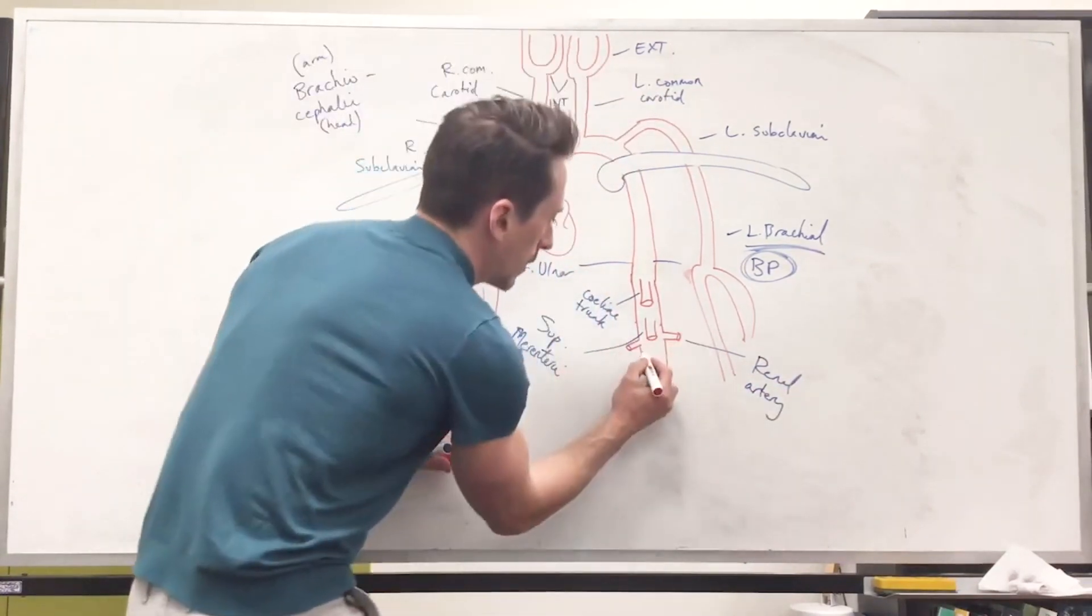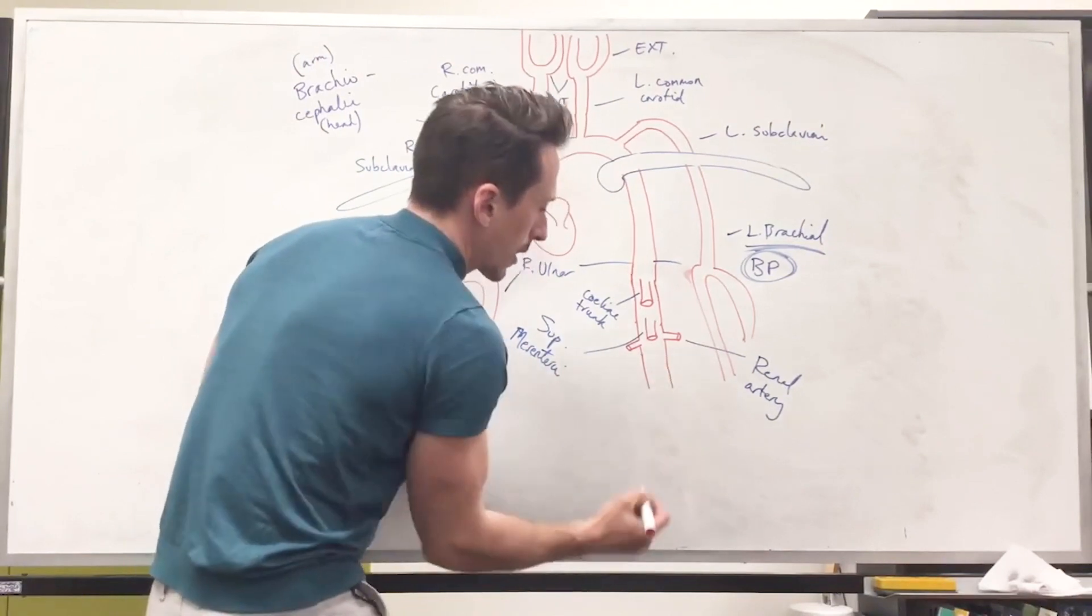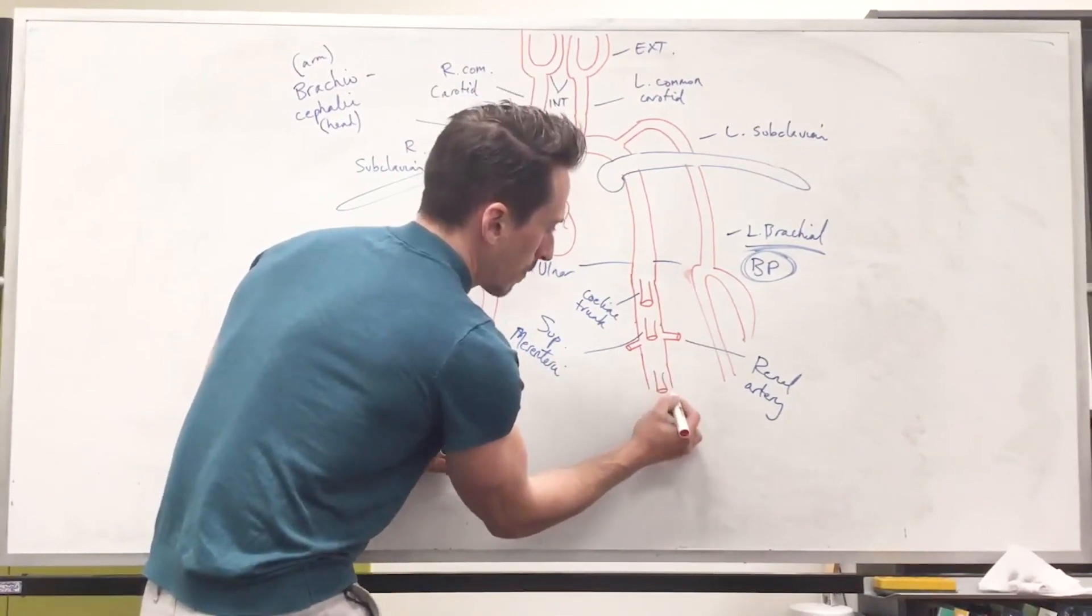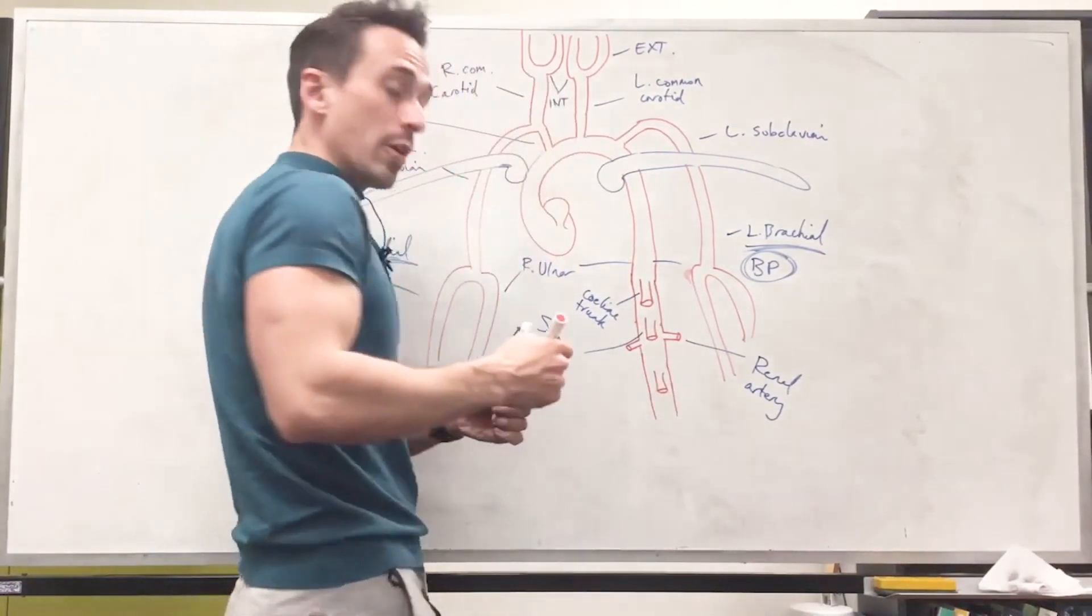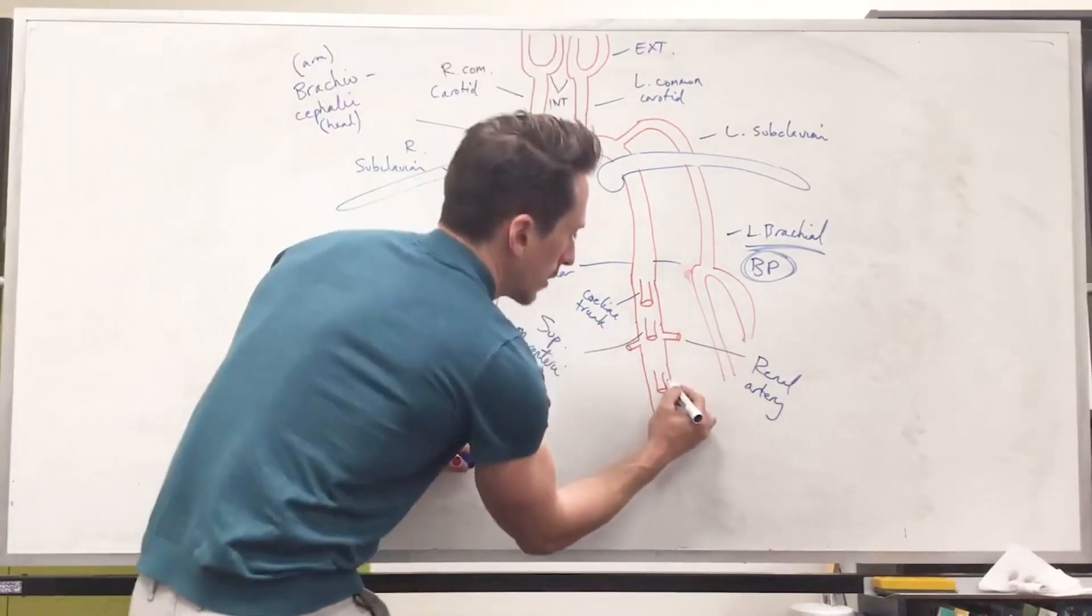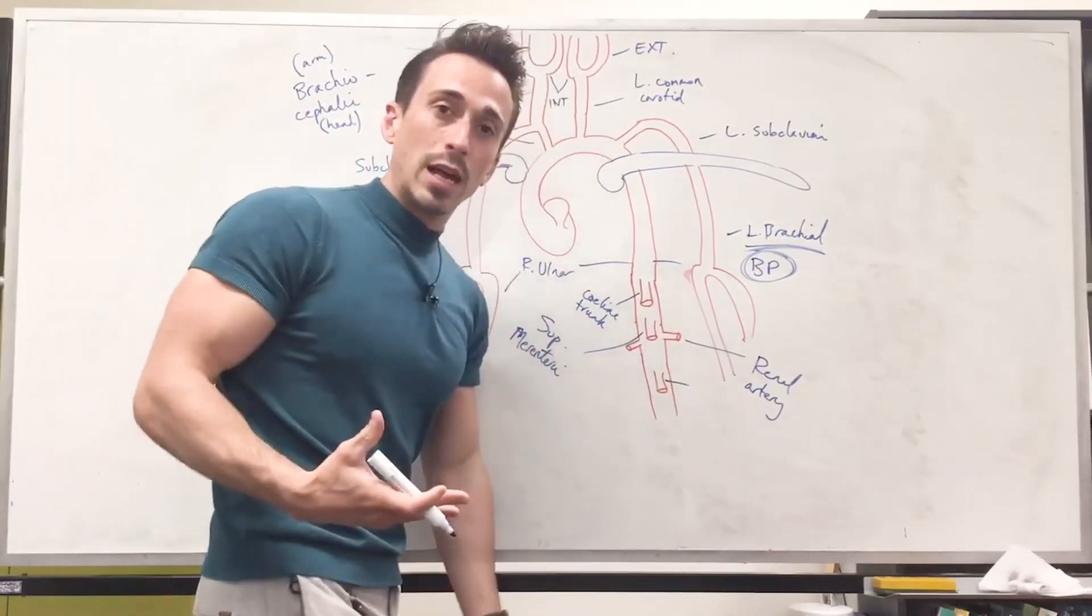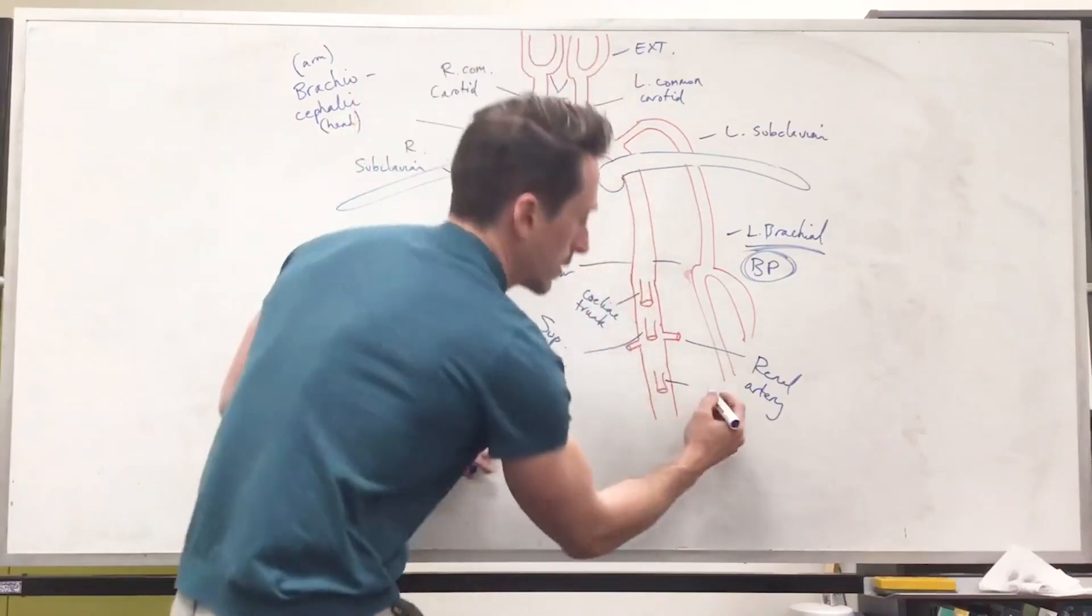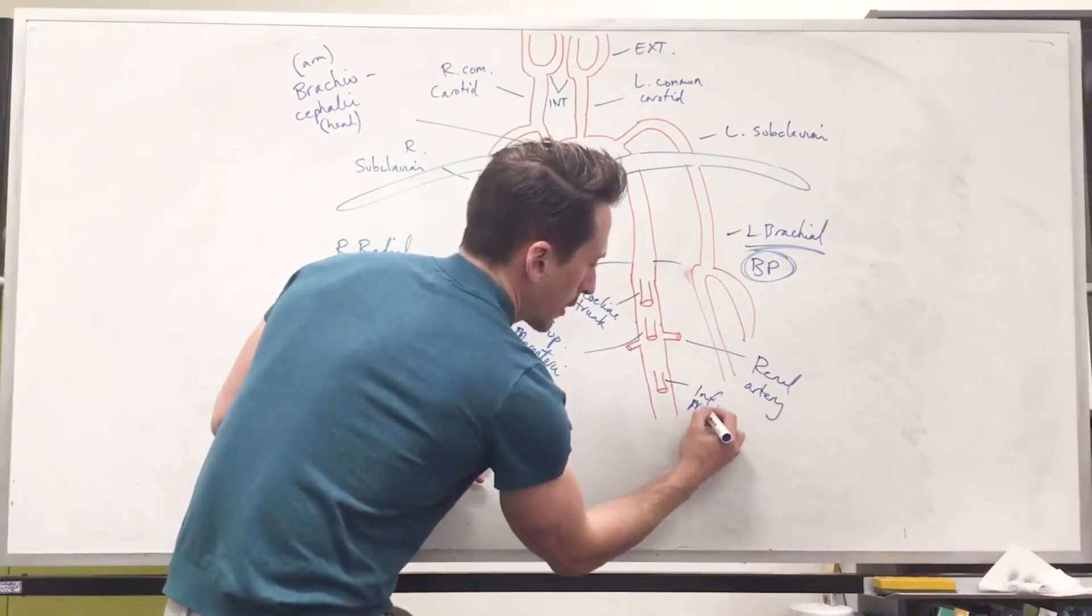Then below that, we're going to have the inferior mesenteric artery, and the inferior mesenteric artery is going to give blood to the rest of the large intestines, rectum up to anus. Inferior mesenteric.